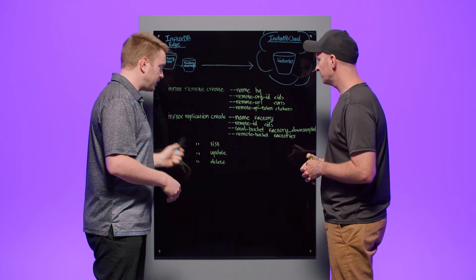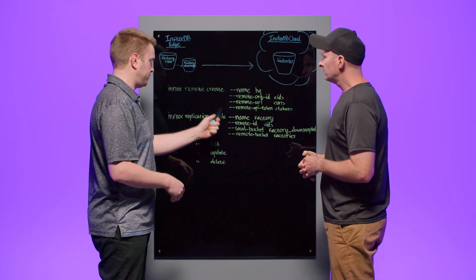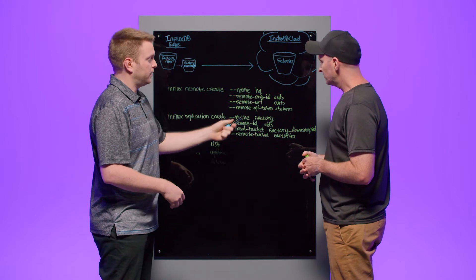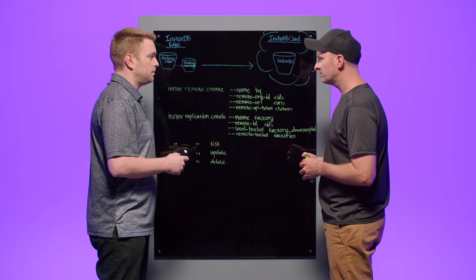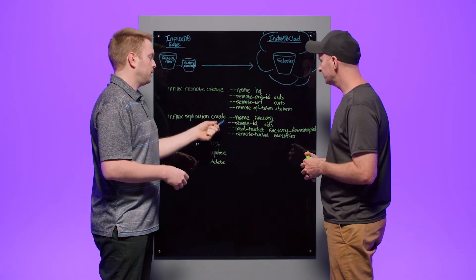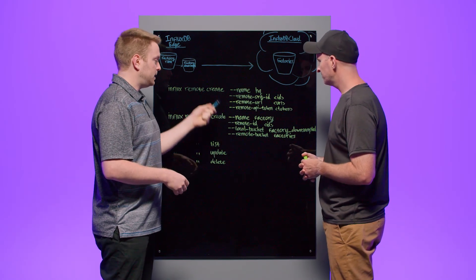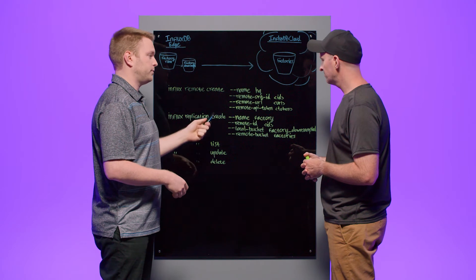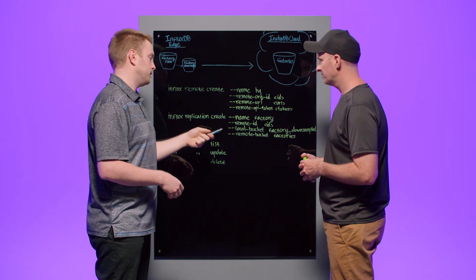So the second step is creating your first replication. You do the same shape command here, name it. In this case, I'm naming it factory because I'm denoting that the data is coming from a factory. Pretty simple. I'm giving it a remote ID, which is what I got here. That's just to associate the replication to the remote, to the connection.